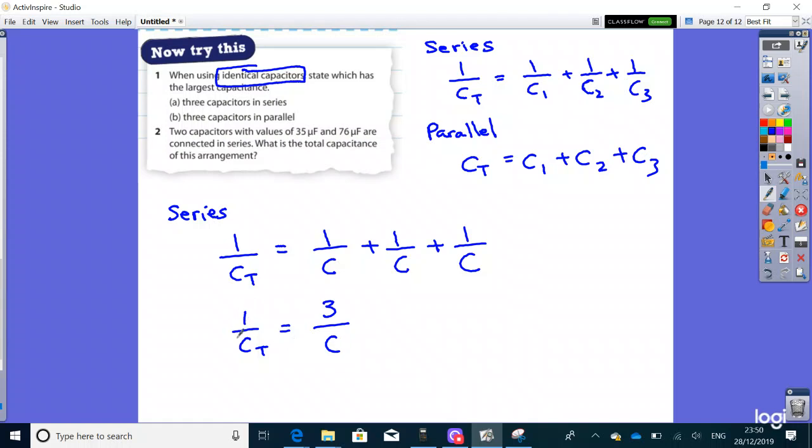To get rid of the 1/CT, it goes to the other side, so CT equals 1 over this. Remember, 1 divided by something is the same as the reciprocal, which means flipping the fraction upside down. Therefore, the total capacitance is C/3.